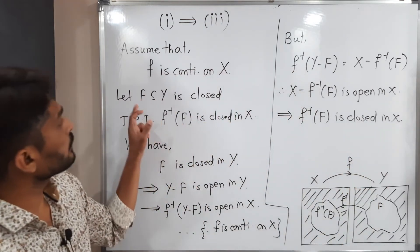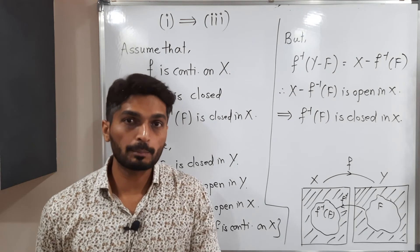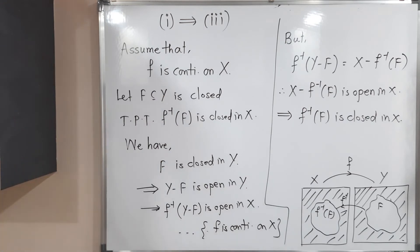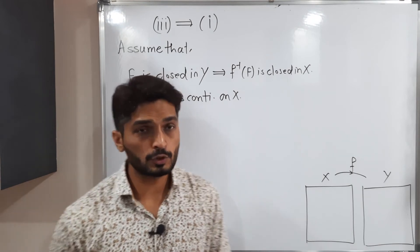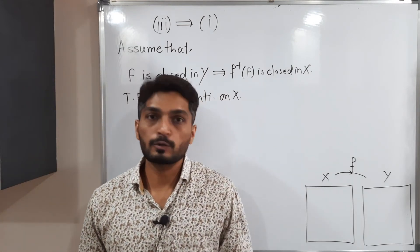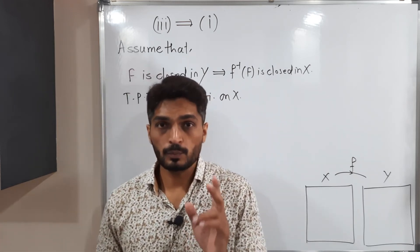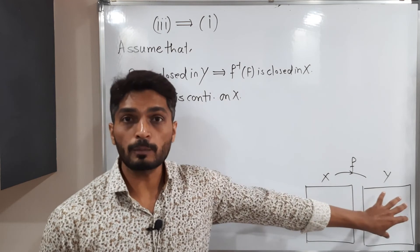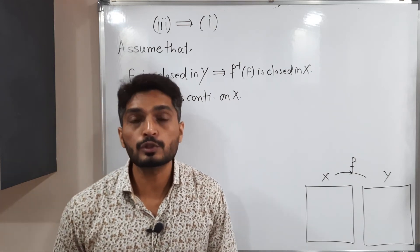We started with F is closed in Y and proved that f inverse of F is closed in X. In this way we proved 1 implies 3. Only the last part remains: 3 implies 1. Let G be an open set in Y. Then Y minus G is closed in Y, since G is open and the complement of an open set is closed.